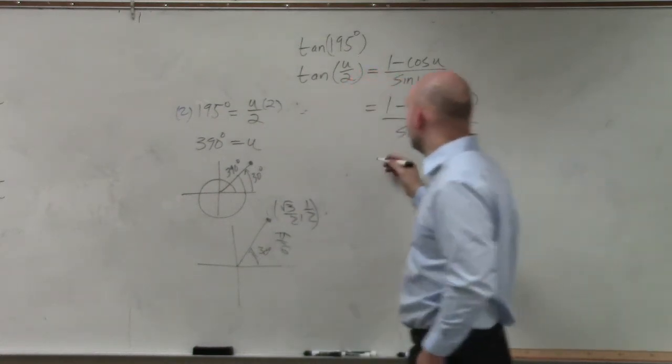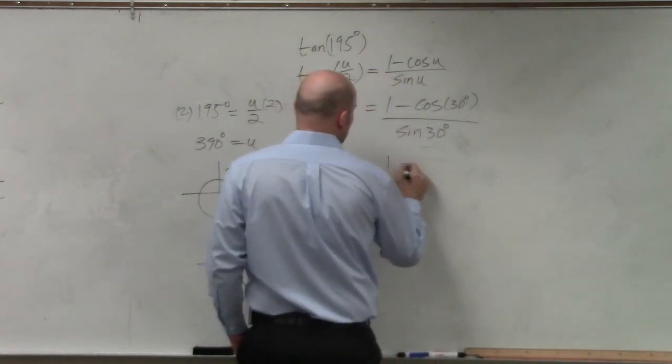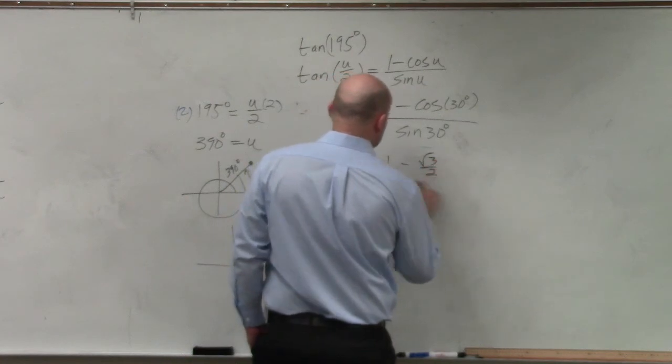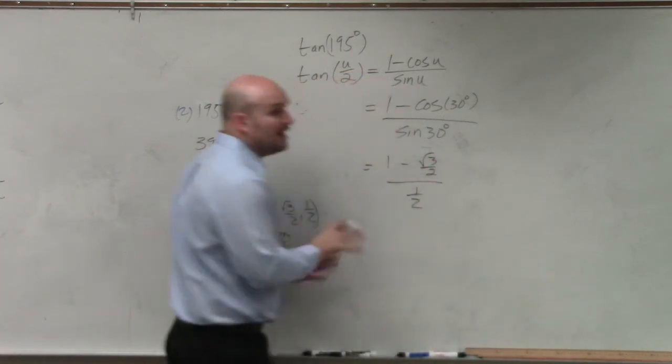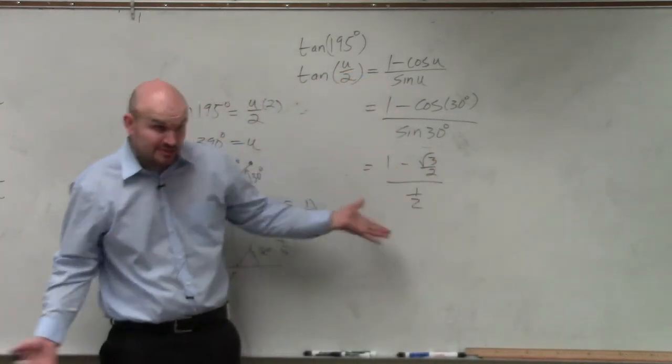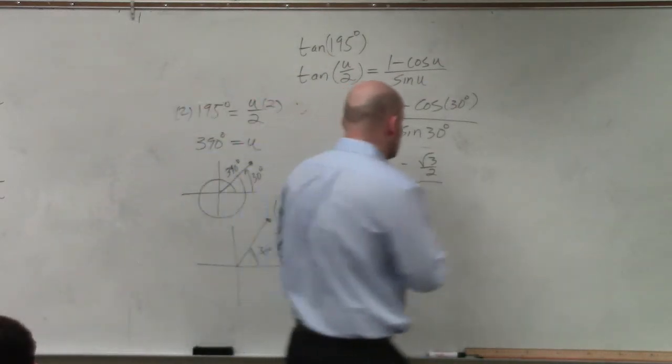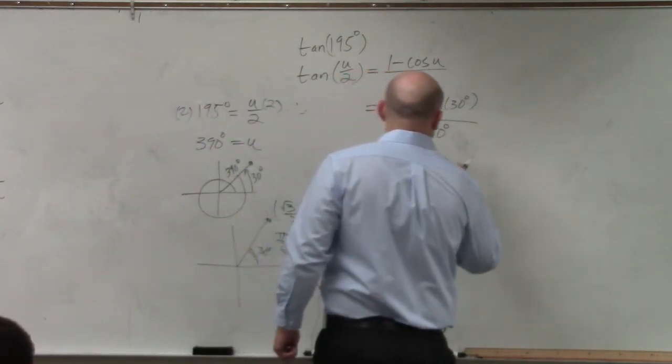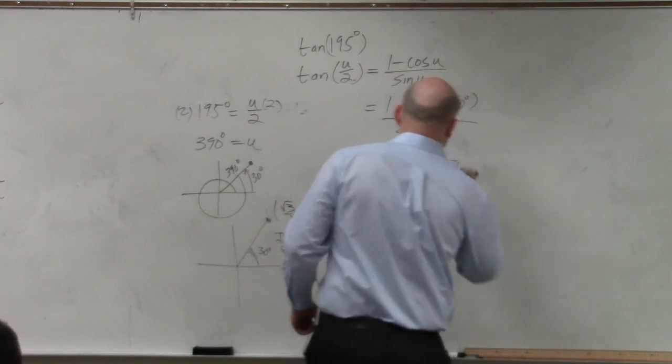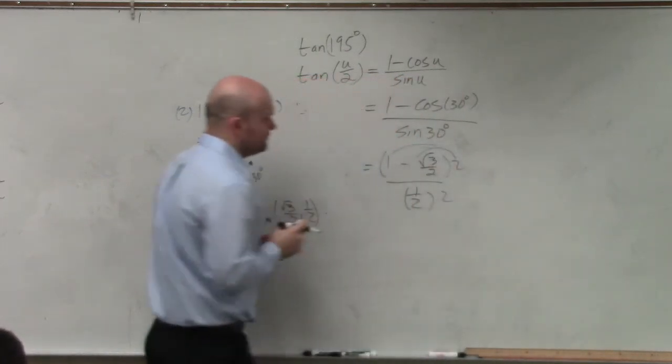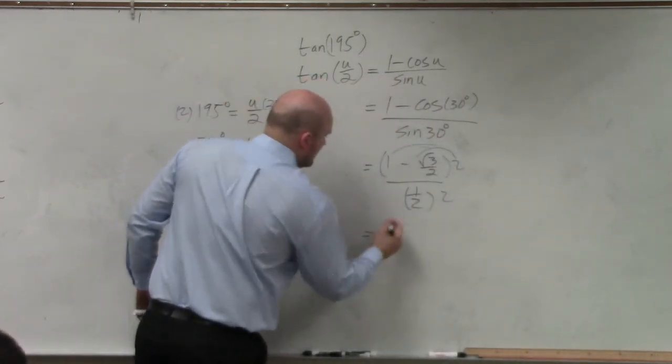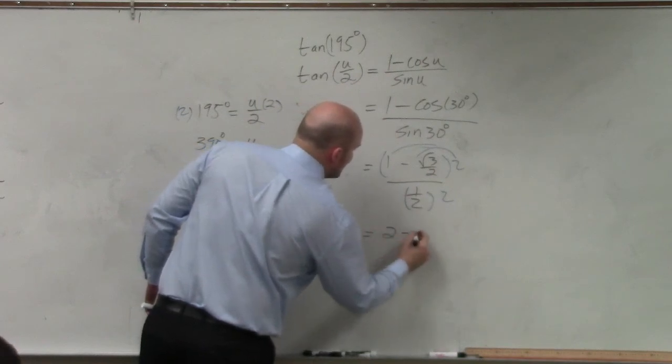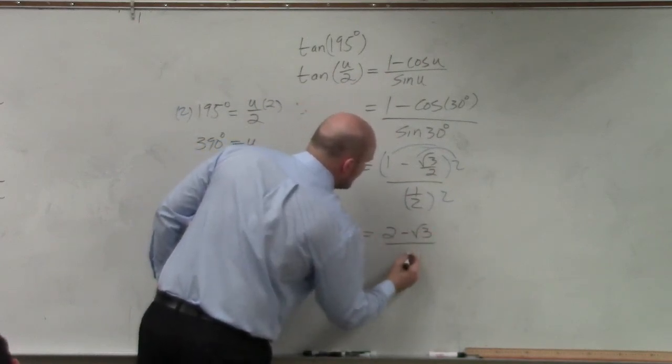So anyways, I did make a mistake there. This is 1 minus square root of 3 over 2 divided by 1 half. However, what should we do then? We should still do the same thing, right? I just had them switched up. So I multiplied by 2 over 2. Thank you for that catch. Therefore, I get 2 minus the square root of 3 over 1.